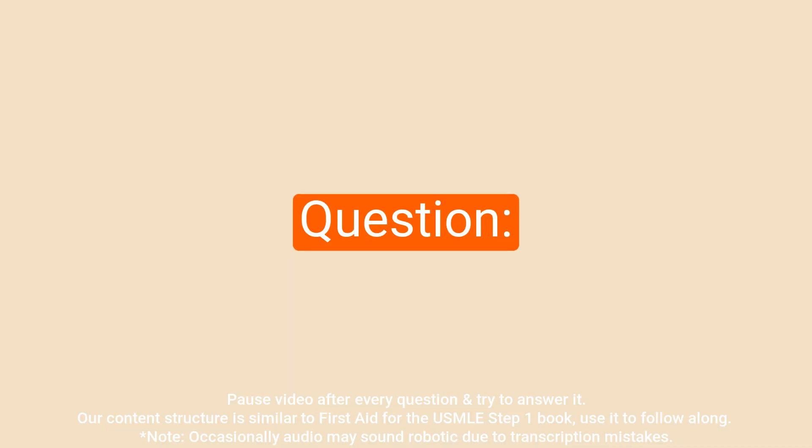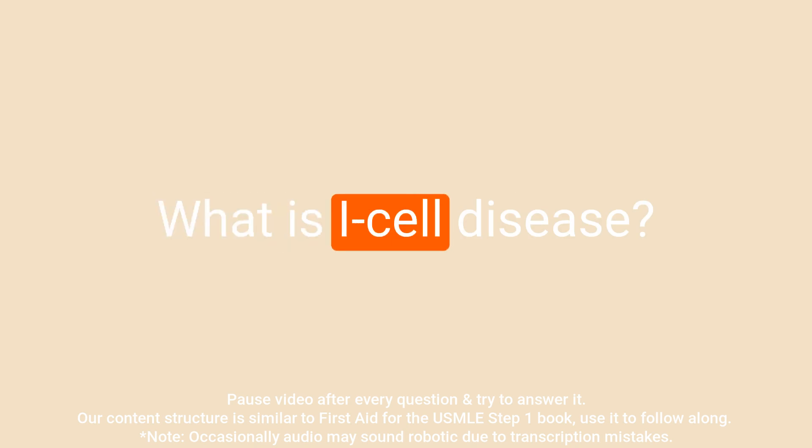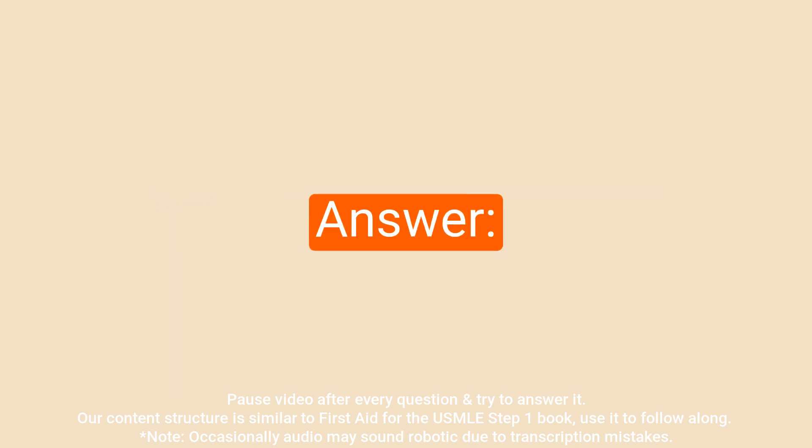This is USMLE QA — USMLE material presented in a question and answer format structured similar to the First Aid for the USMLE Step 1 book. Question: What is I cell disease? Answer,